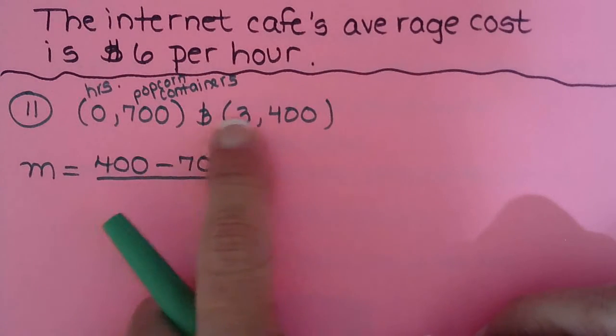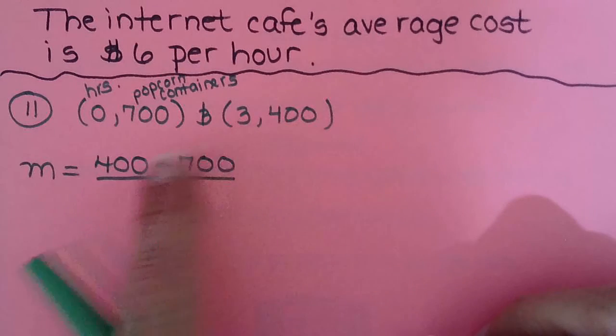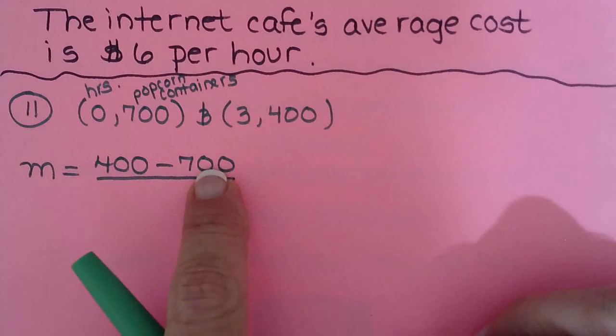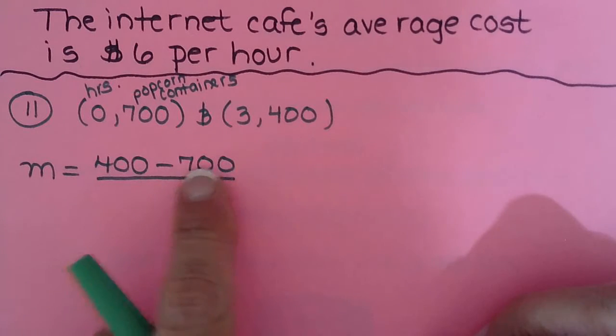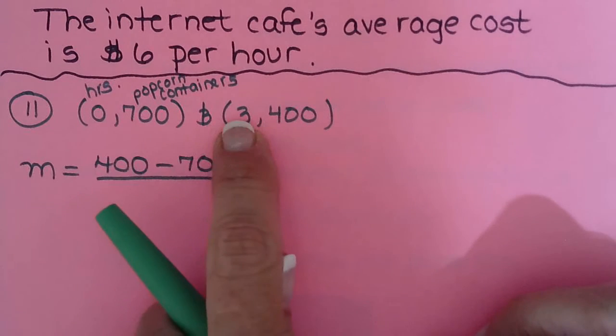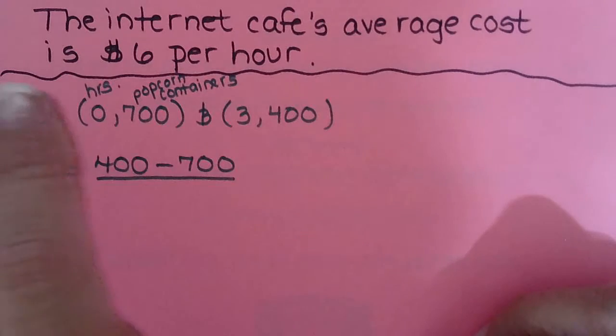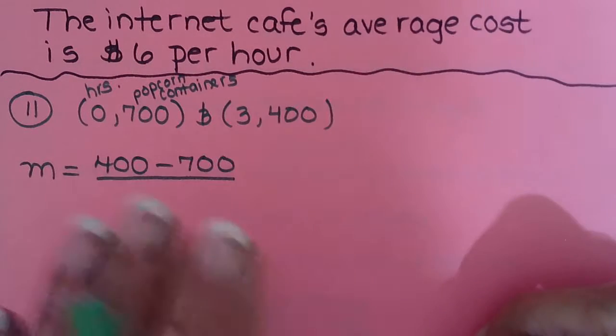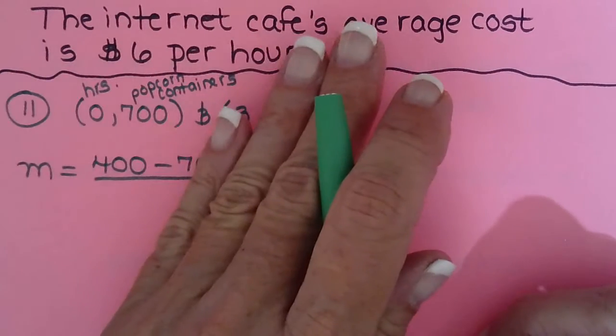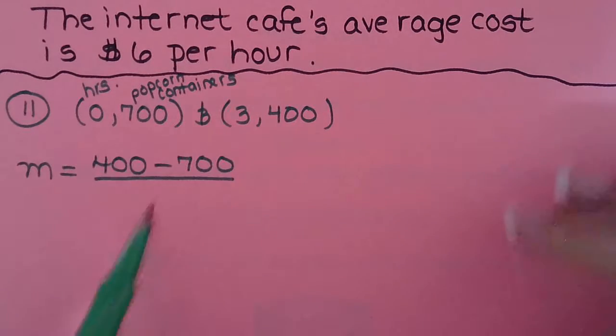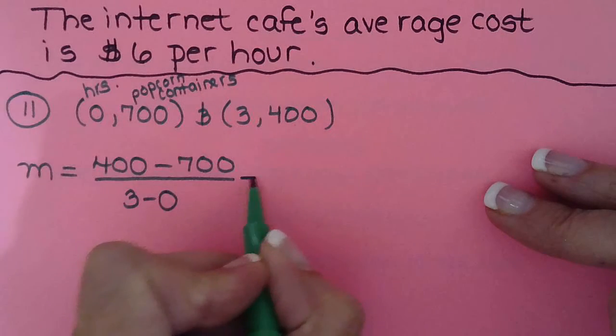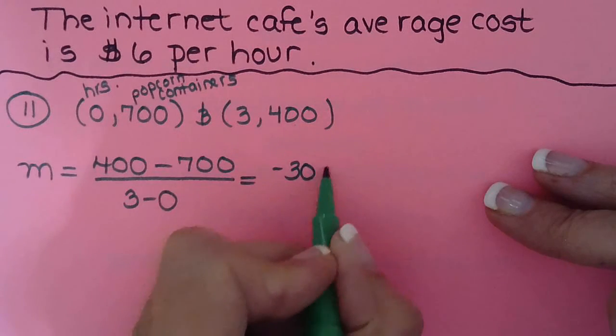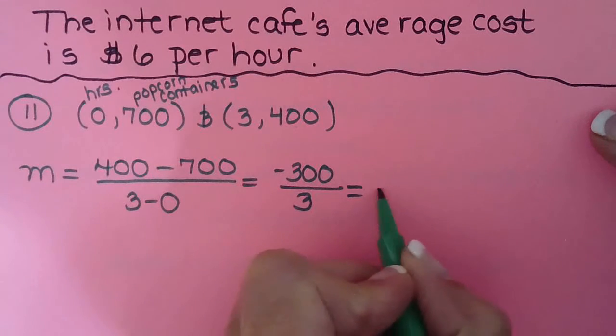So I can see this is going down. So it's not surprising to me when I started doing the slope before I realized the video was done, that it's going to be a negative slope, right? 400 minus 700. And that's because the popcorn container pile is going down as they sell more and more popcorn. So second y minus the first y over second x minus the first x. So that would be negative 300 over 3, which comes out to be negative 100.